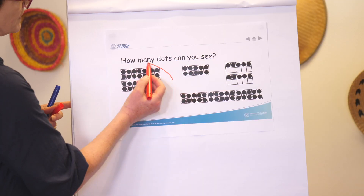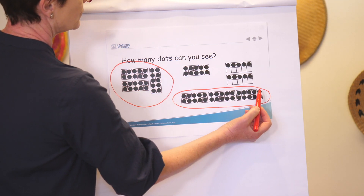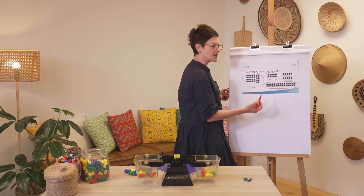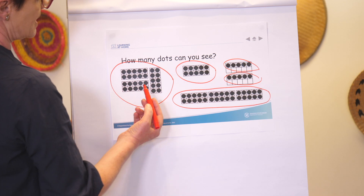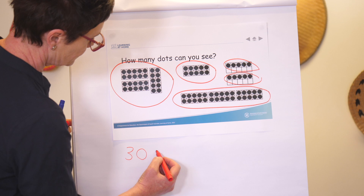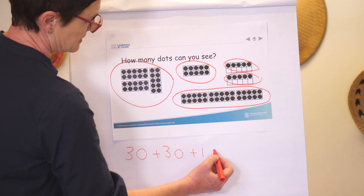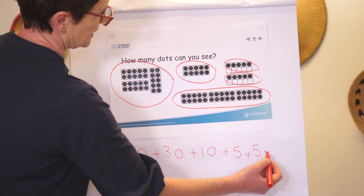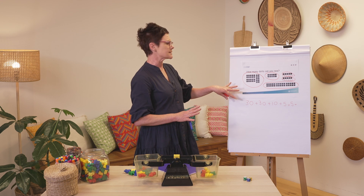First of all, I can see three lots of ten, another three lots of ten, and one lot of ten. This is an interesting dot formation — I think I can see a five and a five. So I've got three lots of ten which make 30, three lots of ten which make 30, one lot of ten, one lot of five, and one lot of five. That's the first collection of partitions I can see.